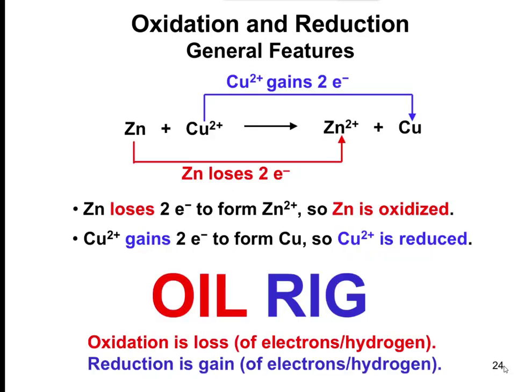The general way to remember oxidation and reduction is by using the mnemonic device OIL RIG: Oxidation Is Losing, Reduction Is Gaining. Oxidation is loss — in parentheses, of electrons or of a hydrogen. That's noted because later in the semester when we talk about sugars and organic chemistry, there will also be gaining or losing of hydrogens, which is really kind of an electron. But either way: oxidation is losing, reduction is gaining.